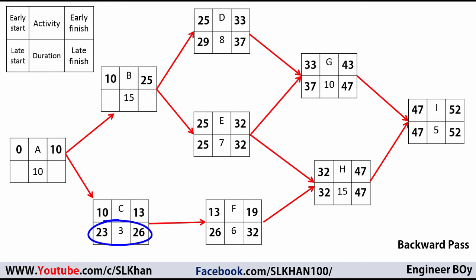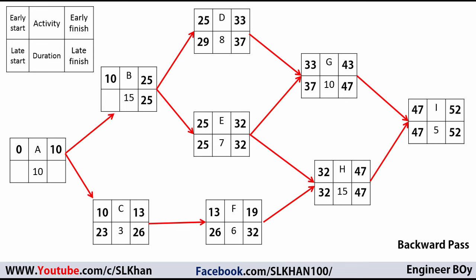For Activity B, we look at the late start of D and E — 29 and 25. We take the minimum value, which is 25, as the late finish of Activity B. Subtracting duration 15: 25 minus 15 gives a late start of 10 days for Activity B.